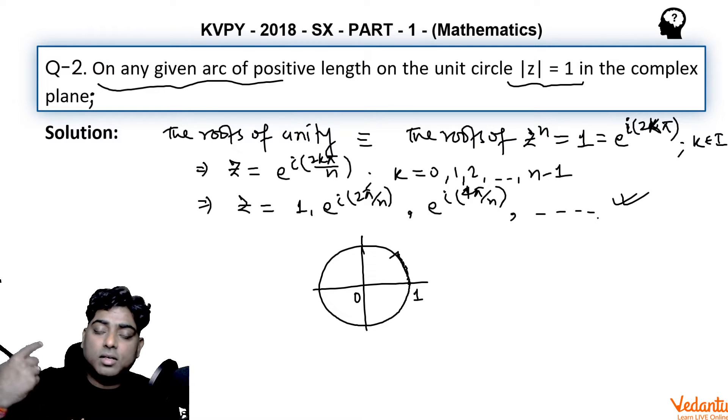These roots of unity are distributed symmetrically on this circle. The distance between two consecutive roots, the chord joining two consecutive roots, will actually subtend what angle? 2 pi by n at center.